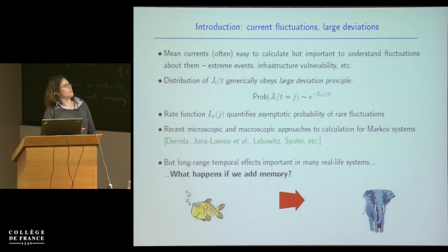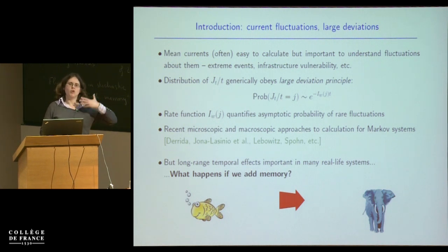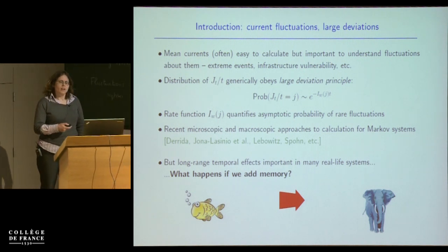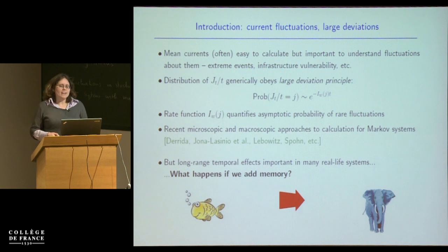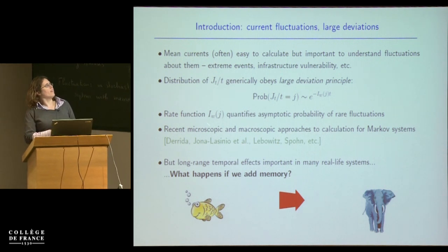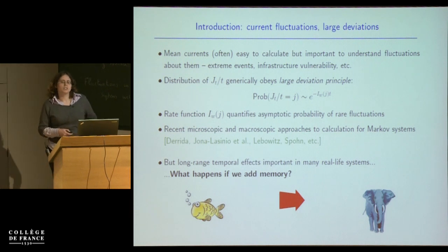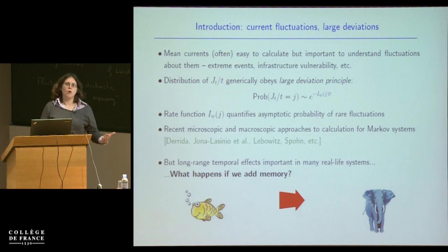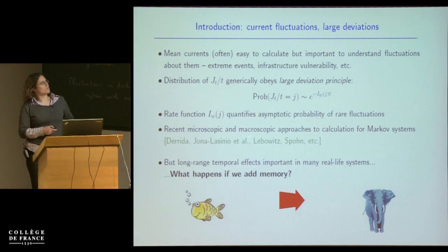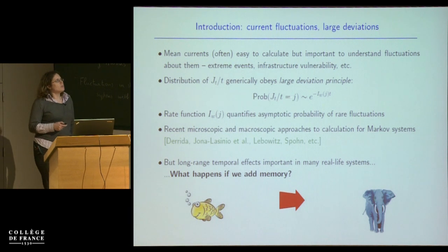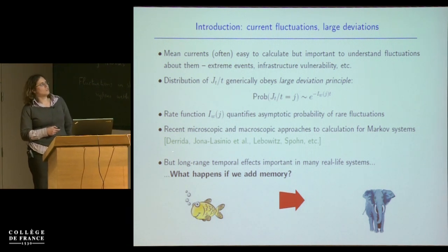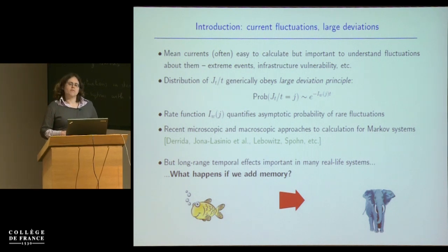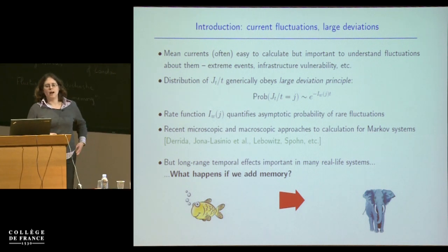The rate function is zero at the mean current and positive and generally convex everywhere else. This tells you that the probability of seeing a current away from the mean gets exponentially smaller as you measure for longer and longer times, and the rate function quantifies how fast that probability gets smaller — it quantifies the asymptotic probability of seeing rare fluctuations away from the mean. The form of the rate function depends on the model, encoded in the rates w. There has been a whole industry of recent work calculating this rate function for various different models, both from microscopic lattice-based and macroscopic hydrodynamic approaches, but almost always for Markovian systems without memory.